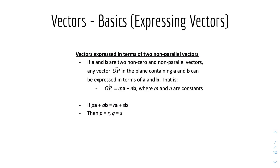And now we'll talk about expressing vectors. Here are vectors expressed in terms of two non-parallel vectors. If A and B are two non-zero non-parallel vectors, any vector OP in the plane containing AB can be expressed as OP equals mA plus nB, where m and n are constants. So if pA plus qB equals rA plus sB, that means p equals r and q equals s.